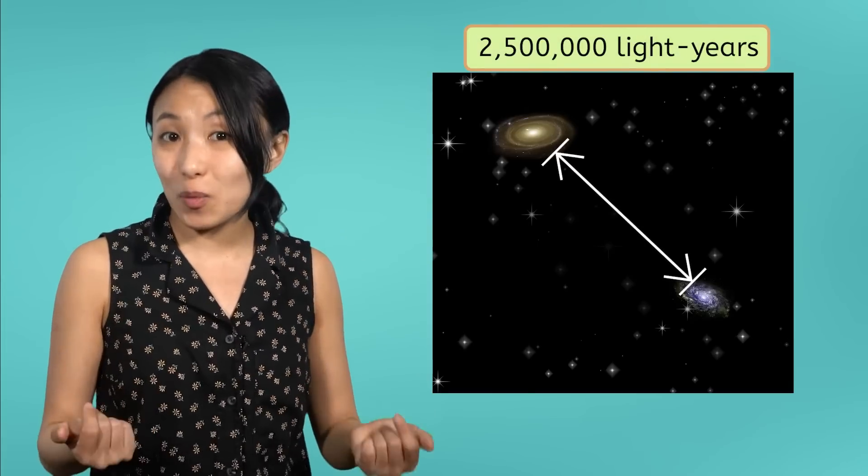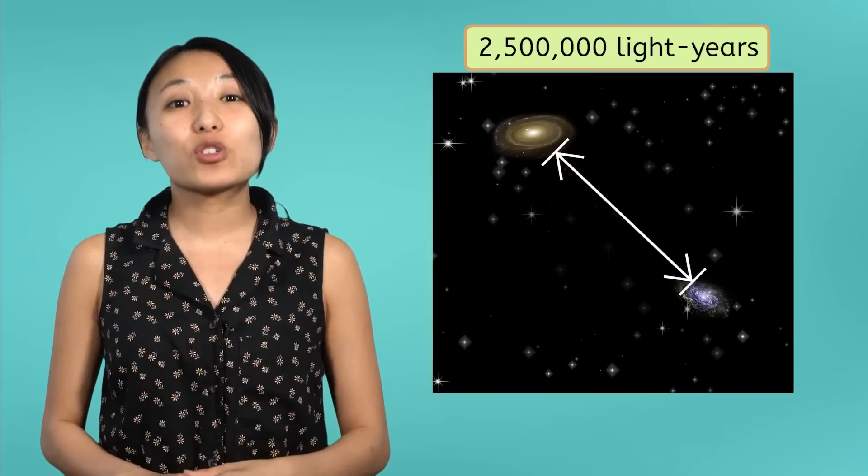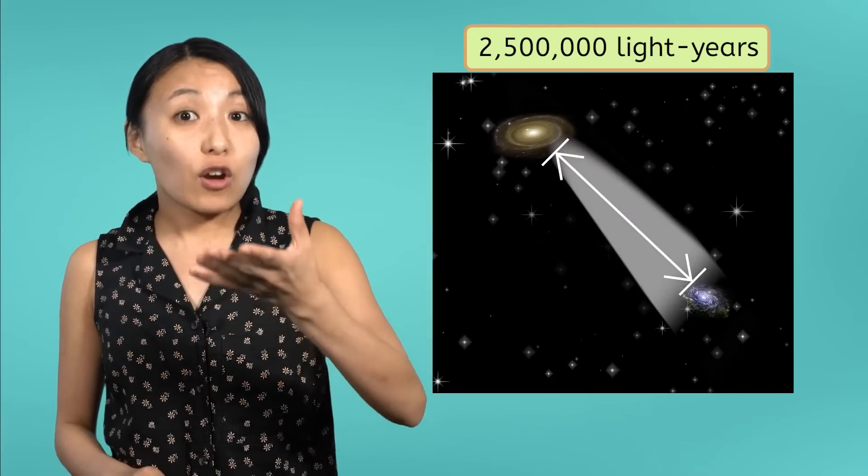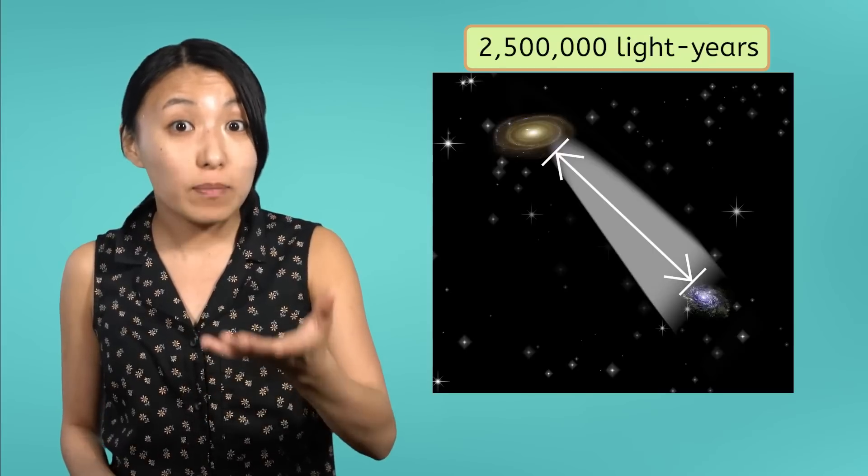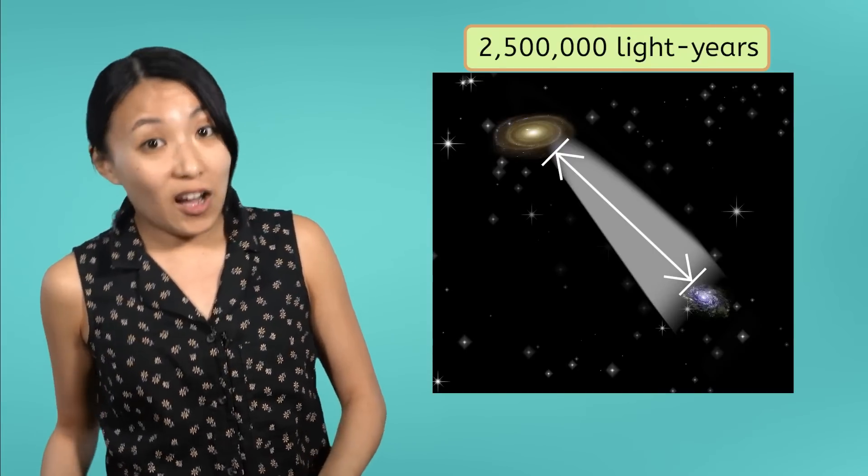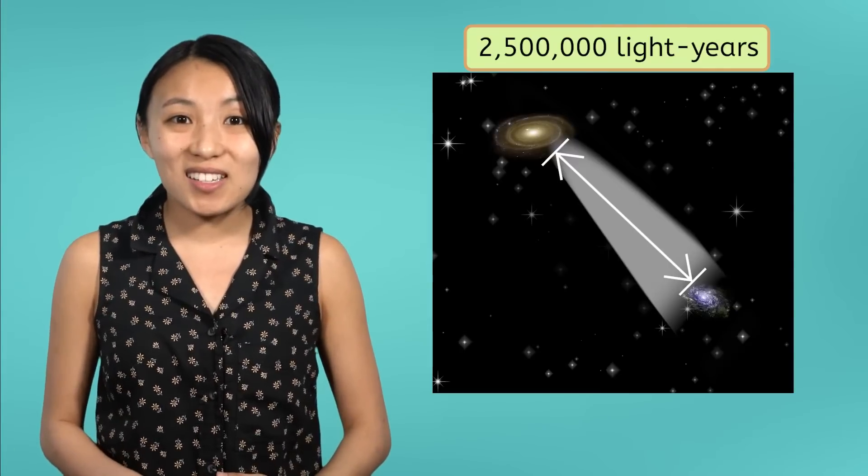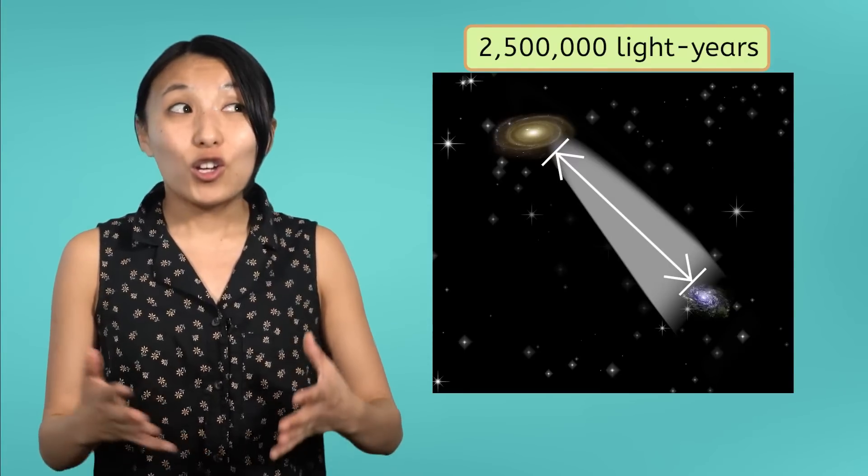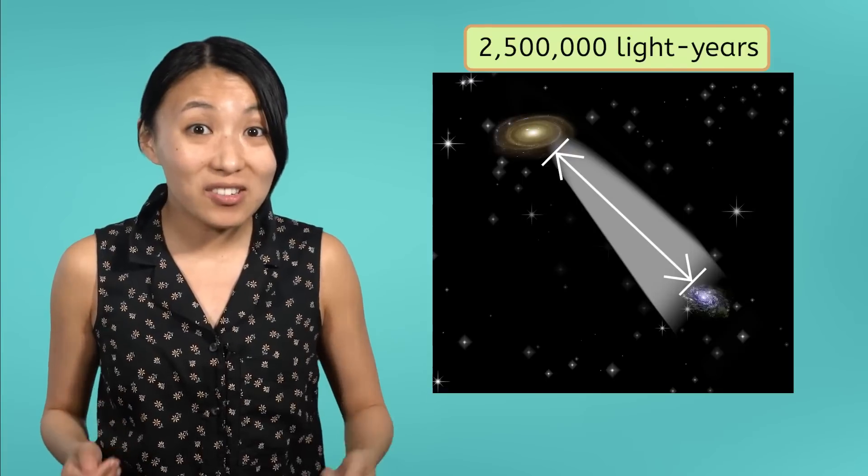So, let's put this another way. When astronomers observe the Andromeda Galaxy, they're seeing light that traveled for over two and a half million years before reaching their telescopes. In other words, some scientists think we're seeing the Andromeda Galaxy as it might have been two and a half million years ago.